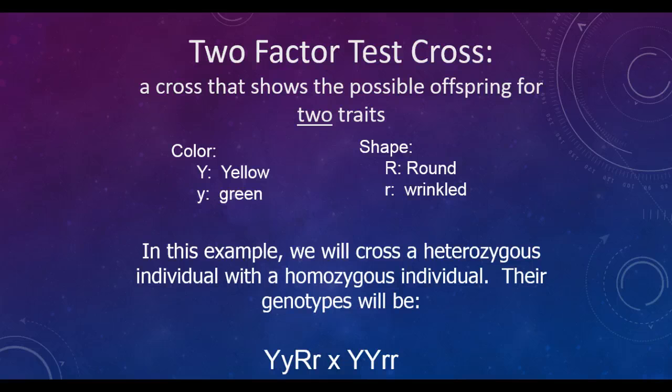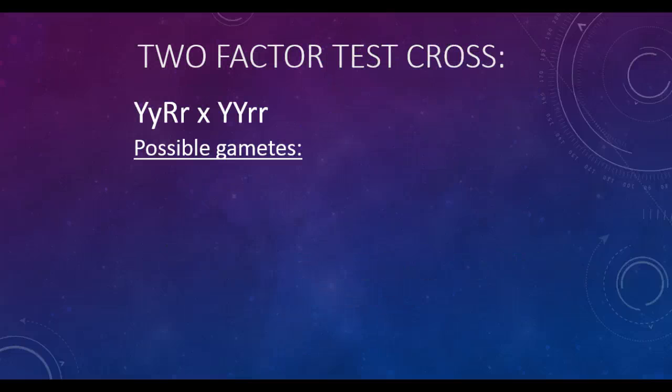Their genotypes will be big Y, little y, big R, little r crossed with big Y, big Y, little r, little r. To set up this two-factor test cross, we can find these possible gamete combinations.